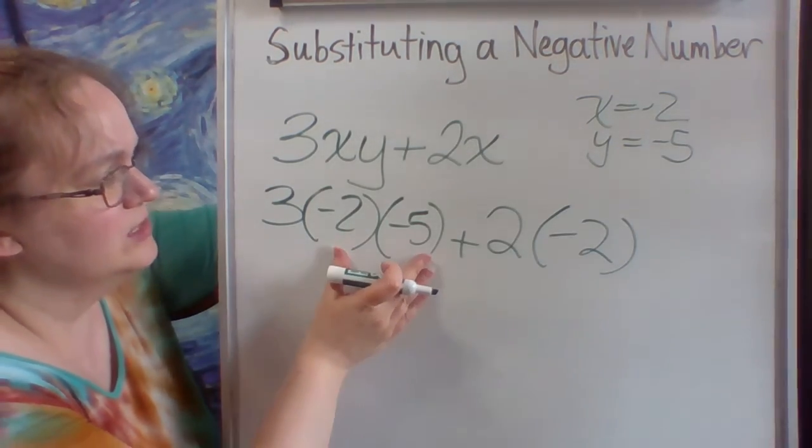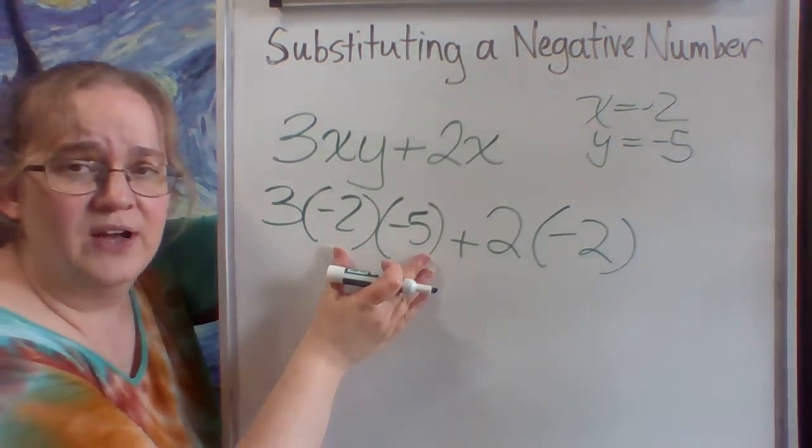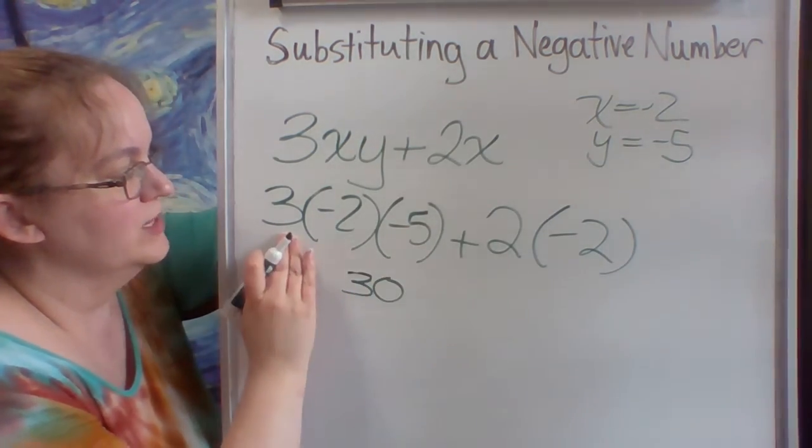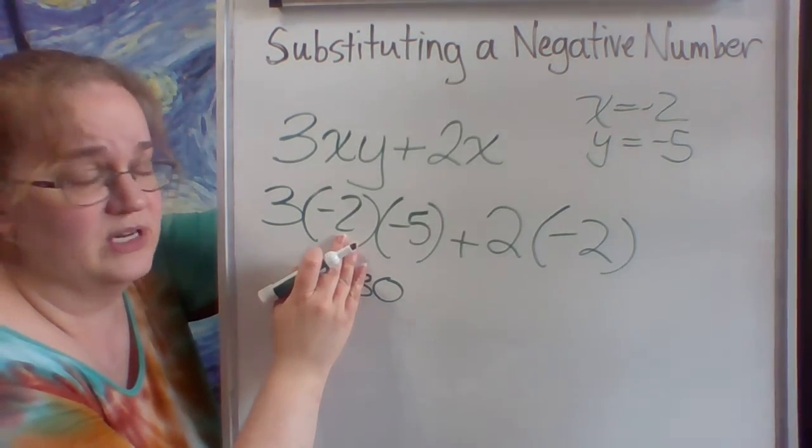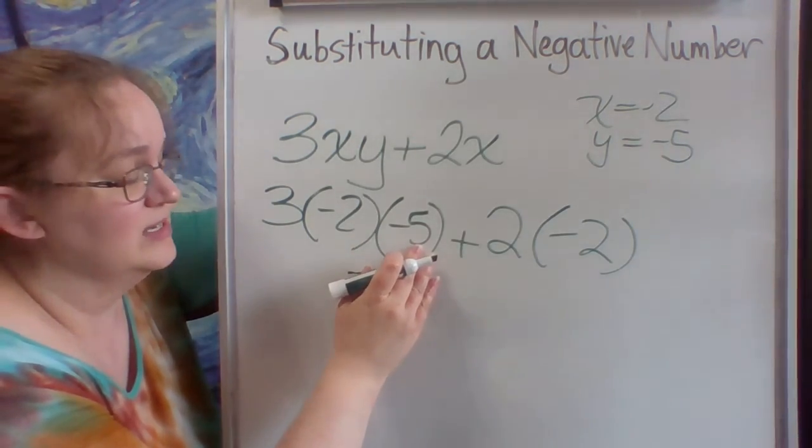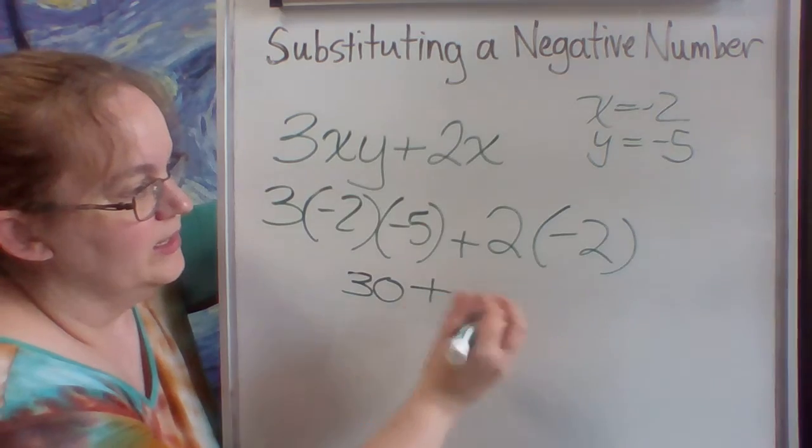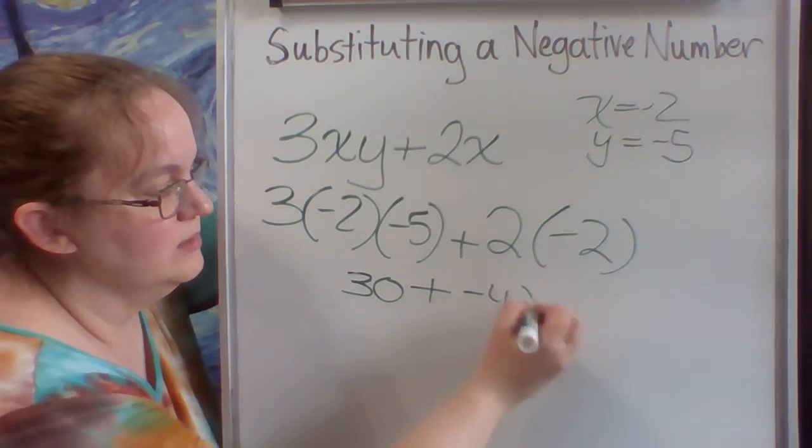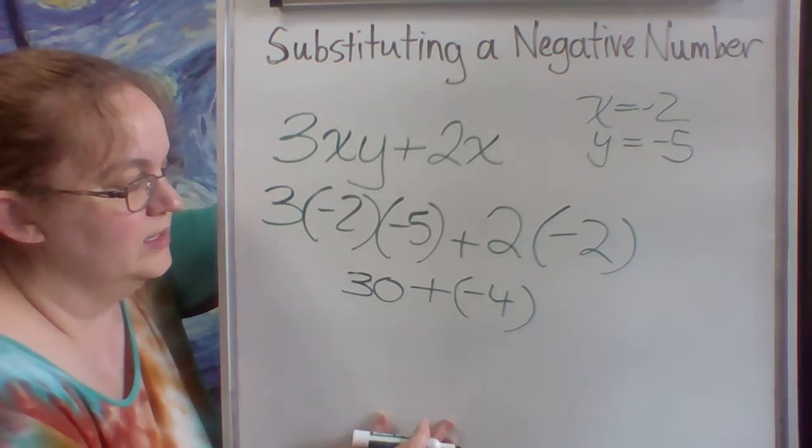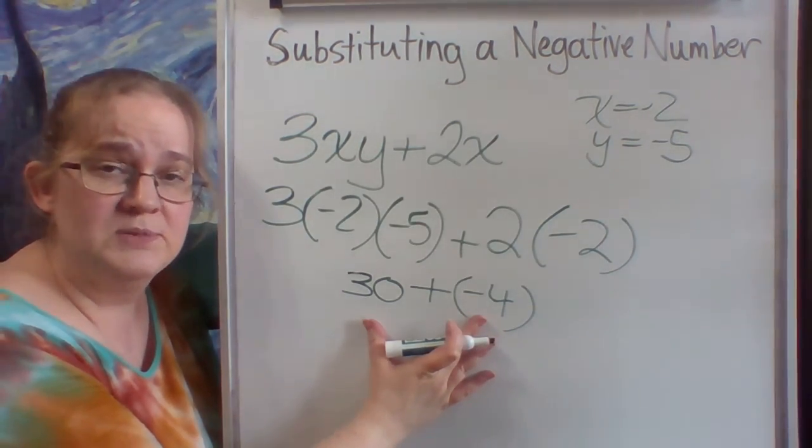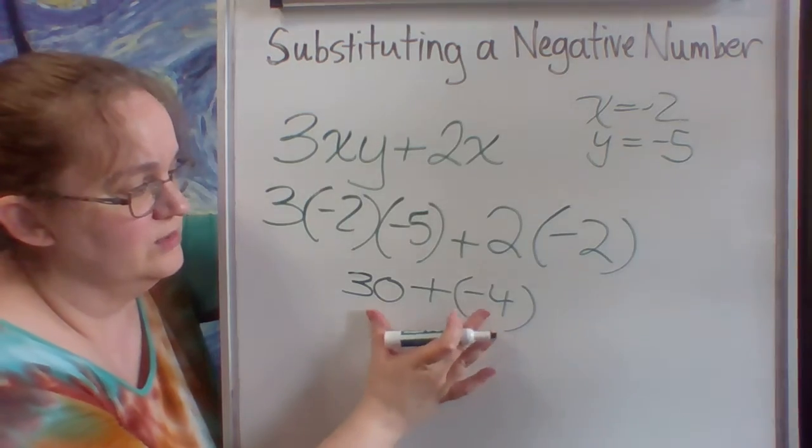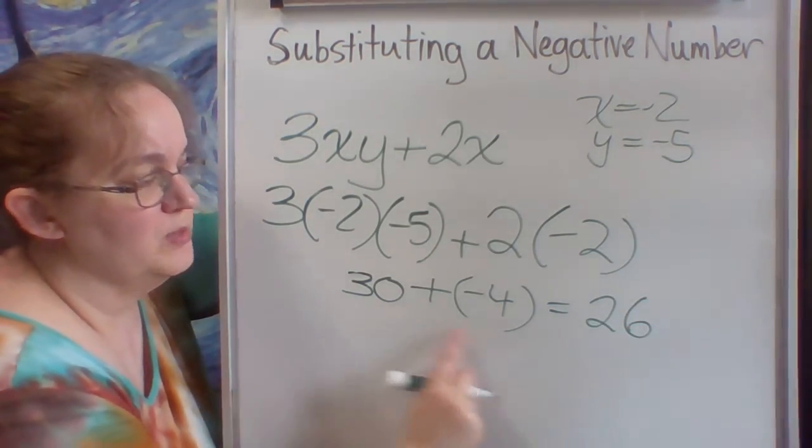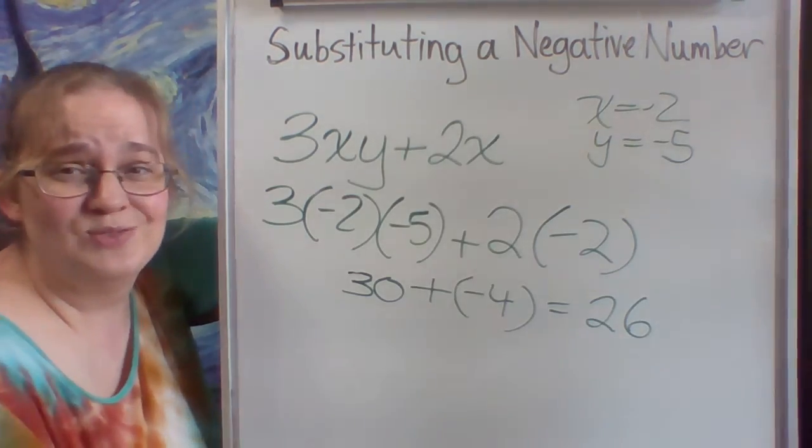So if I look, negative 2 times negative 5 is positive 10 times 3 is 30. Or I could have done 3 times negative 2 is negative 6 times negative 5 is positive 30. And 2 times negative 2 is negative 4. And then since I'm adding and the signs are opposite, I'm just going to really subtract. 30 minus 4 is 26. And since there's more positives than negatives, it's just positive 26.